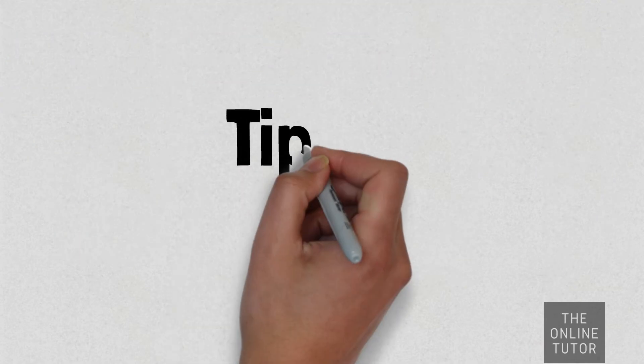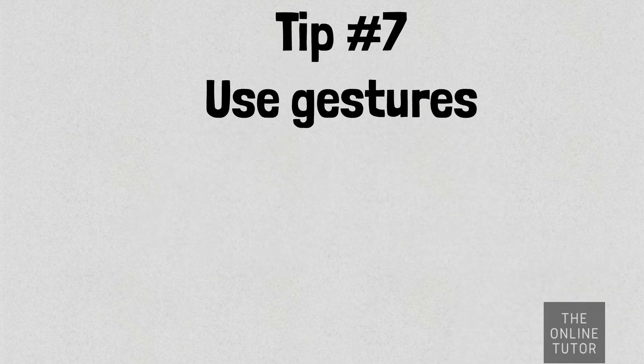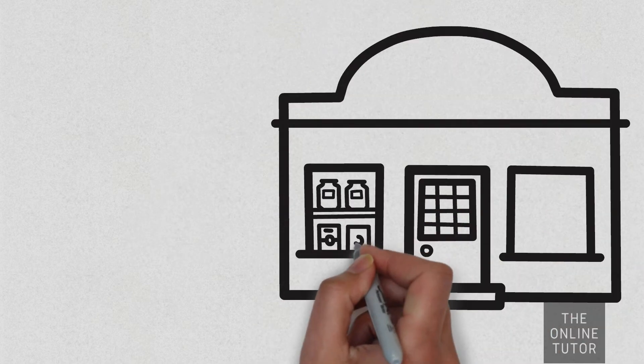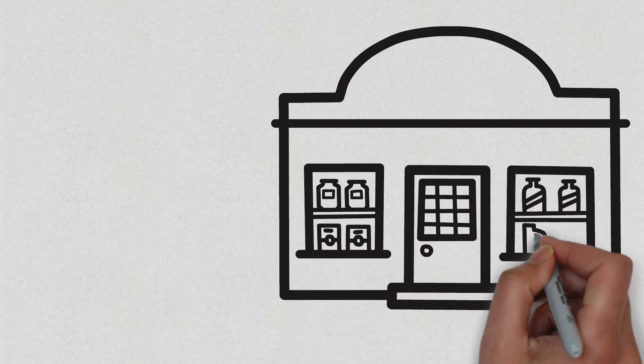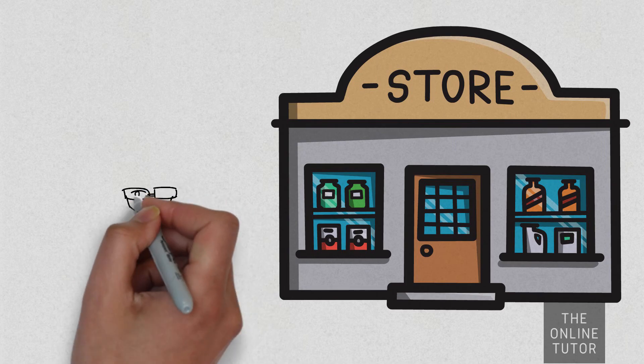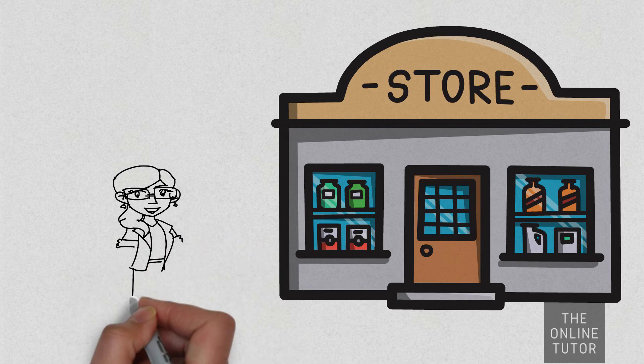Tip number seven: use gestures. Pointing at items in a store or the menu at a restaurant can prove effective when trying to communicate. Imitating actions of verbs can also help convey your desires.